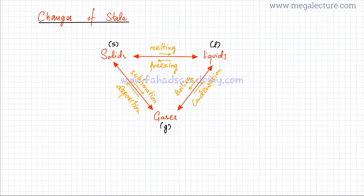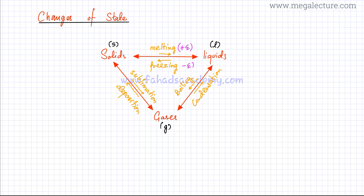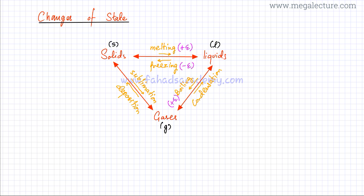Another important thing to know is whether energy is being gained or lost when a change of state occurs. If a solid is changing into liquid — melting — there is a gain of energy, represented as +E. Vice versa, if a liquid is freezing into a solid, the particles are losing energy, represented as −E. Similarly, if a liquid is boiling and changing into gas, that is +E. If a gas is condensing into a liquid, that is −E.